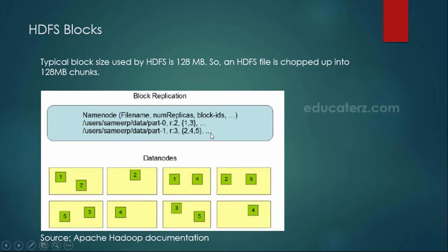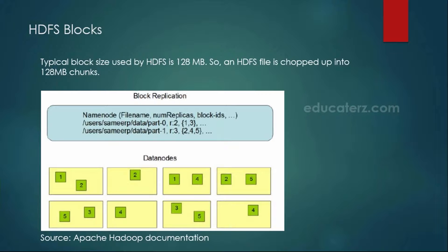The name node will choose 3 different machines to store the part 1 file. Block locations 1 and 3 indicate where blocks are stored. Block 1 is stored twice because the replication factor is 2 — it is present in two machines. Block 3 is also present in 2 machines. When the replication factor is 3, blocks 2, 4, and 5 will be replicated into any 3 different machines. Based on the replication factor, that many replicas are automatically created in the Hadoop cluster.